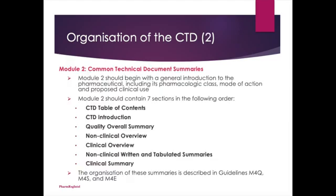Module 2: Common Technical Document Summaries. Module 2 should begin with a general introduction to the pharmaceutical, including its pharmacologic class, mode of action, and proposed clinical use. Module 2 should contain 7 sections in the following order: CTD Table of Contents, CTD Introduction, Quality Overall Summary, Non-Clinical Overview, Clinical Overview, Non-Clinical Written and Tabulated Summaries, and Clinical Summary. The organization of these summaries is described in guidelines M4Q, M4S, and M4E.